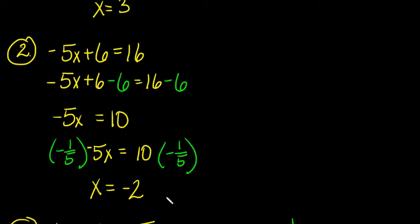Now you've got it by itself. And if you put that into the equation, negative 2 times negative 5 is 10, positive 10, plus 6 is 16. So, I know I got that correct.